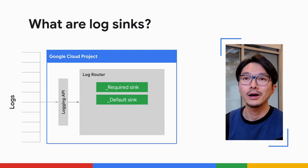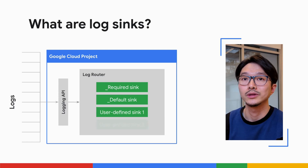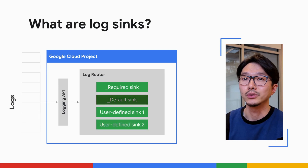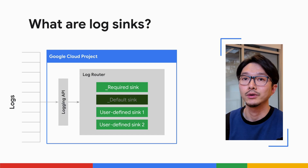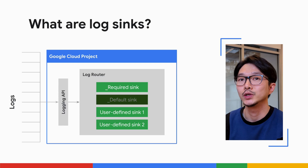Google Cloud allows you to fully customize your log routing. You have options to create additional log sinks with different inclusion and exclusion filters, and you can also make changes to or even disable the default log sink that comes with every Google Cloud project. Use log sinks to filter specific logs and send them exactly where they need to go.